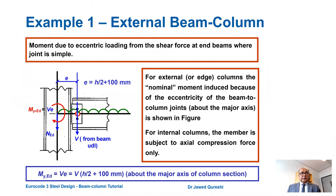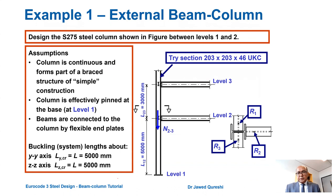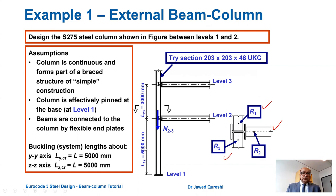In the first example, I have this beam-to-column joint where the moment is induced through eccentricity. This is an external column and the applied moment is V times E, where V is the shear force and E is the eccentricity, about the major axis of the column. The column is connected to three beams at level one, level two and level three. R2 is inducing a reaction. On the left side there is nothing. Top I have R1 and bottom I have R3. Length L12 is five metres and L23 is three metres.